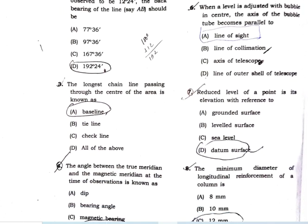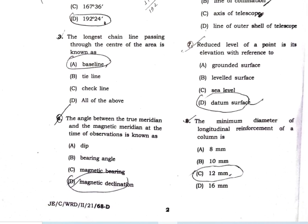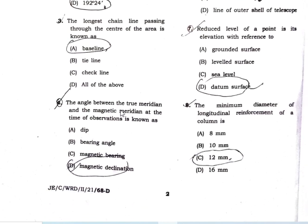The longest line passing through the center of the area is known as the baseline. The angle between the true meridian and the magnetic meridian at the time of observation is known as magnetic declination.